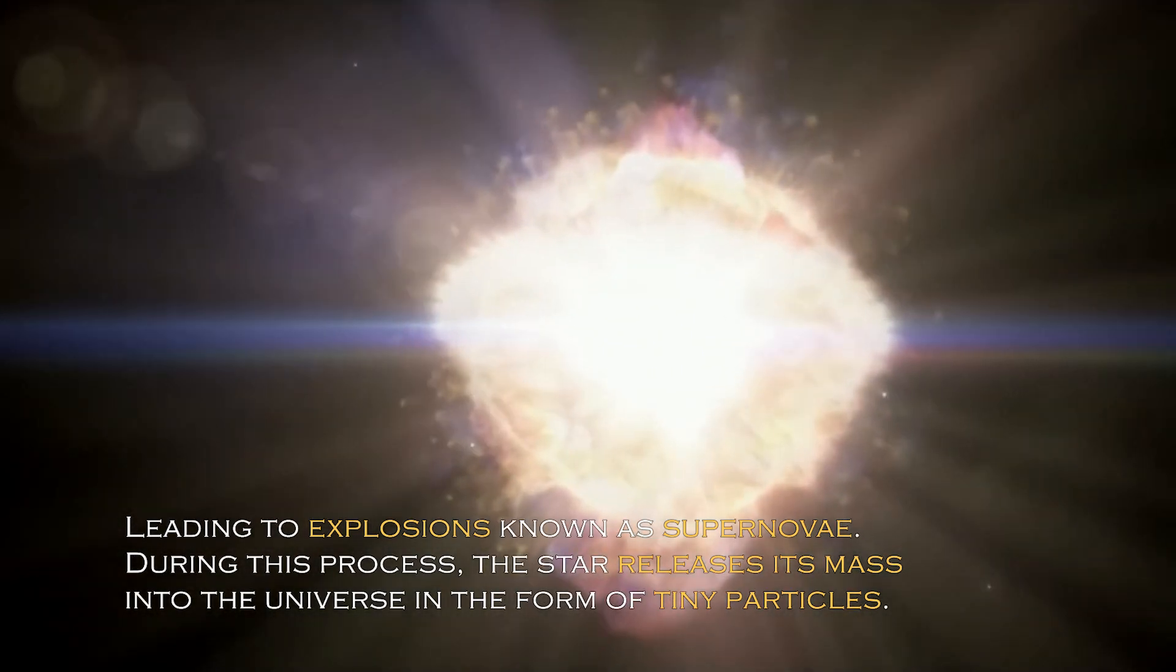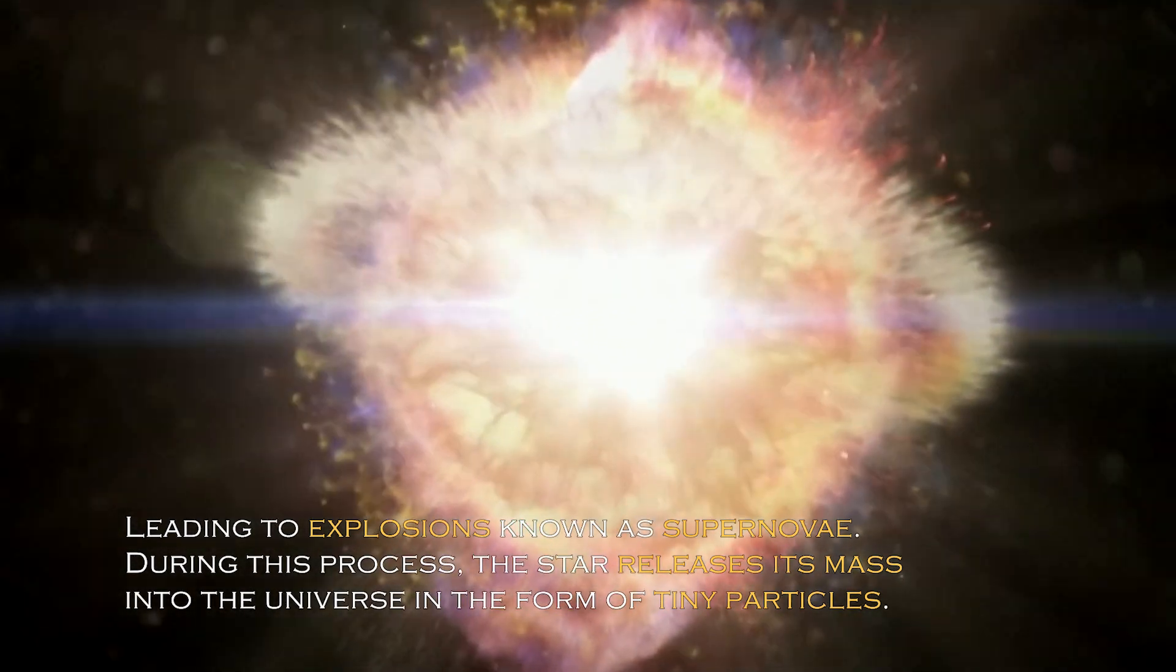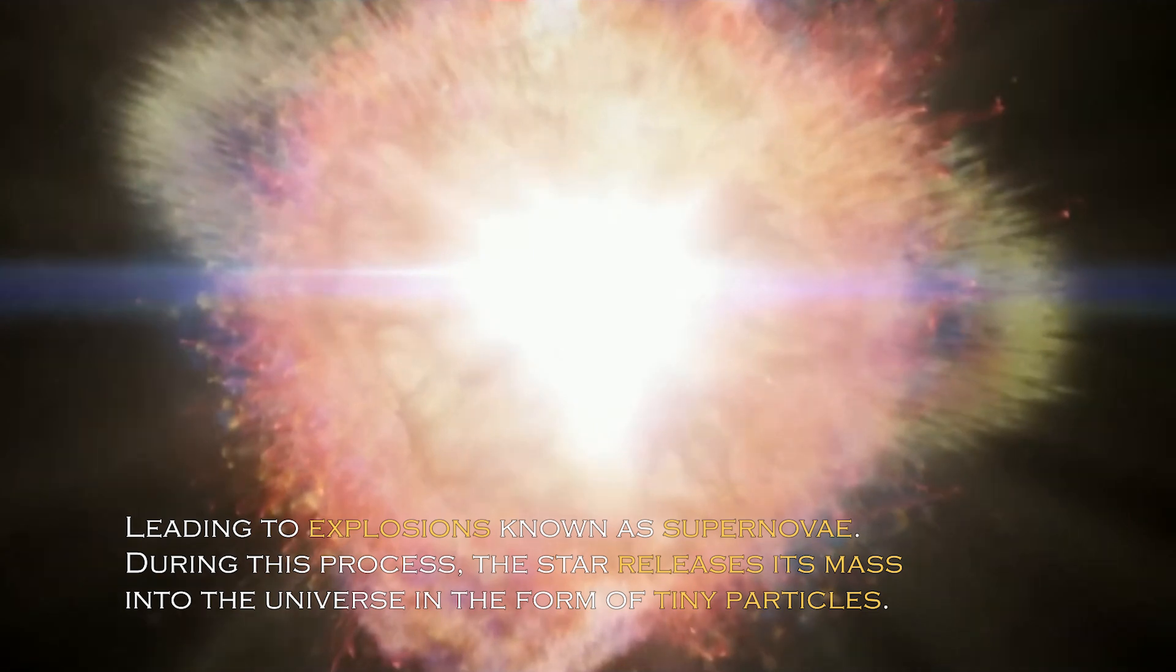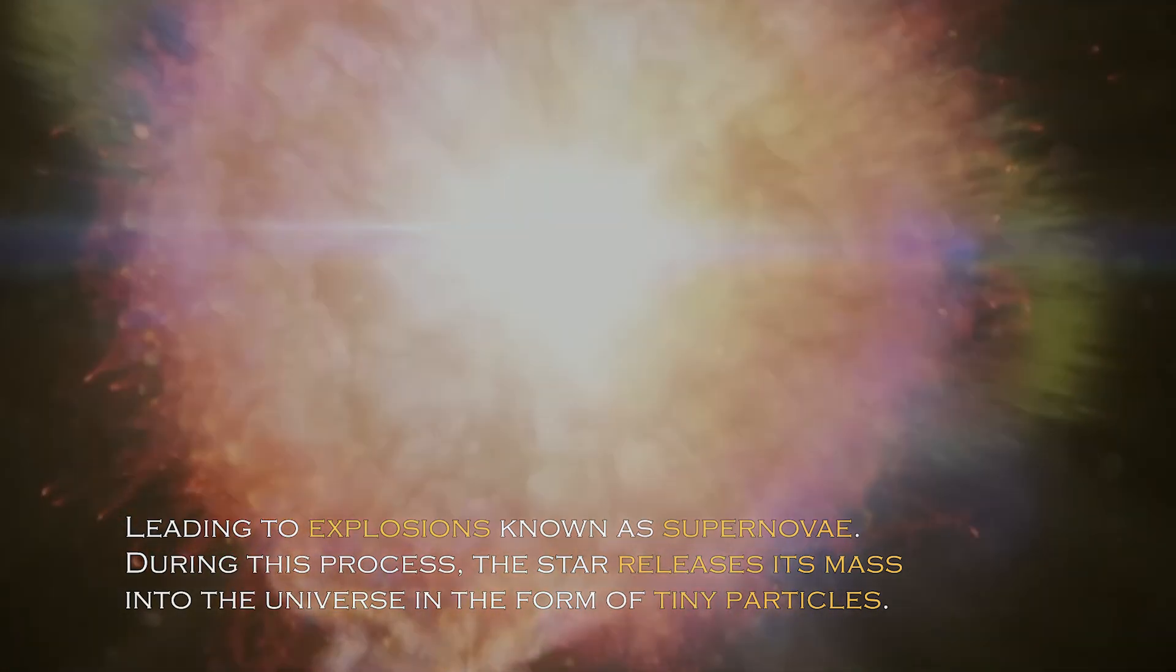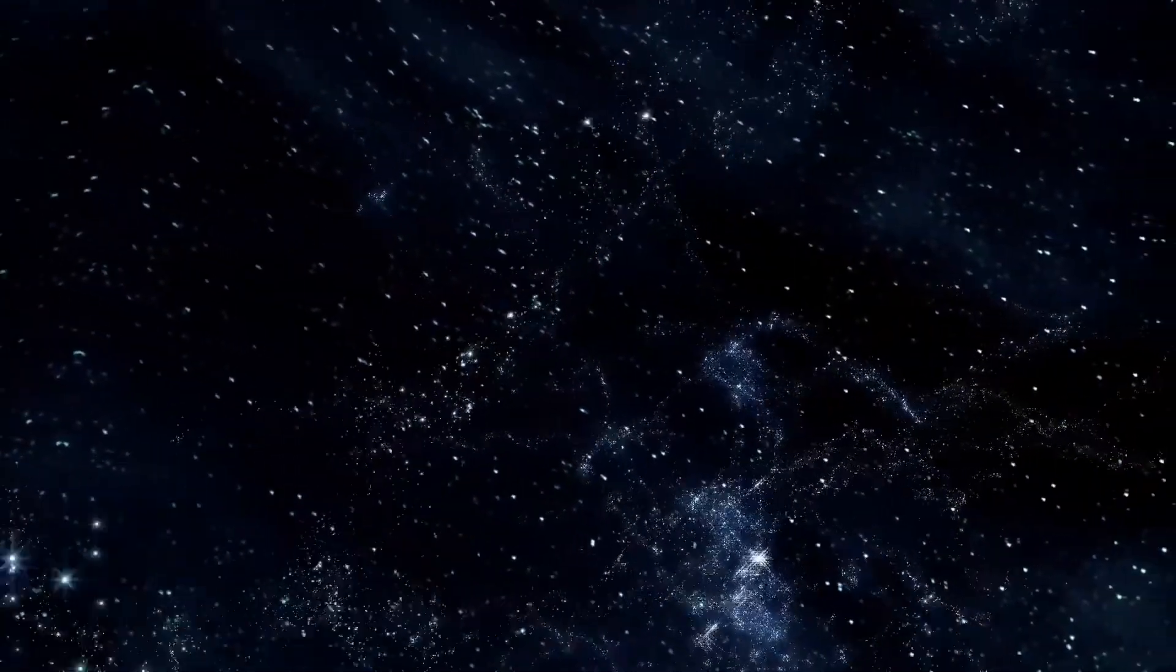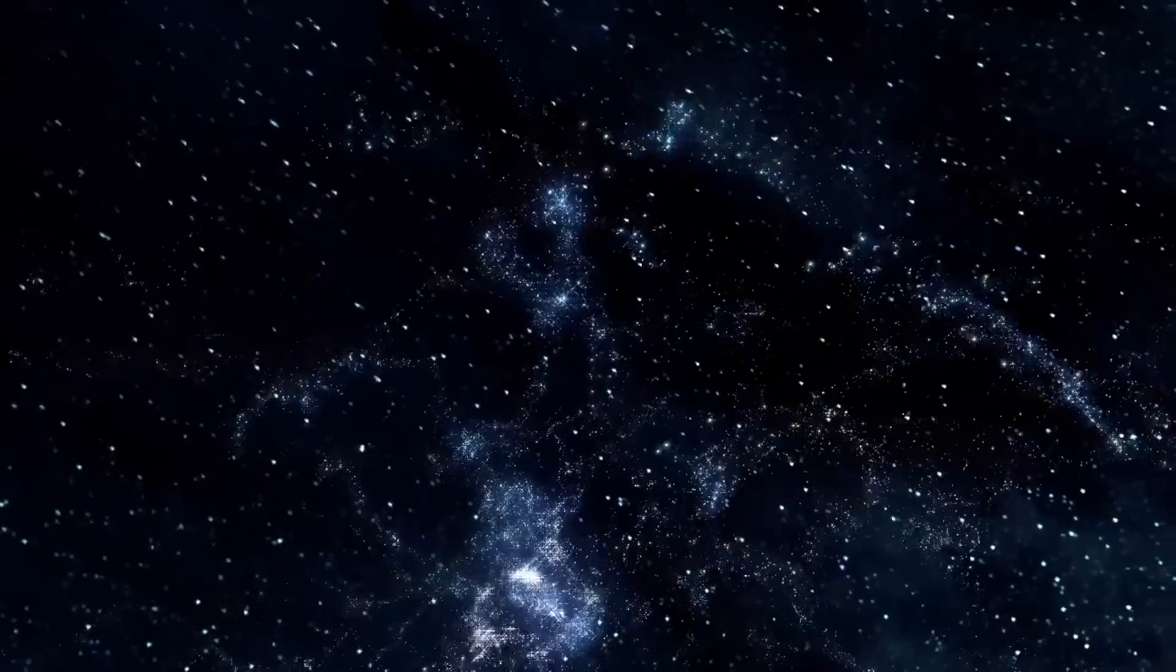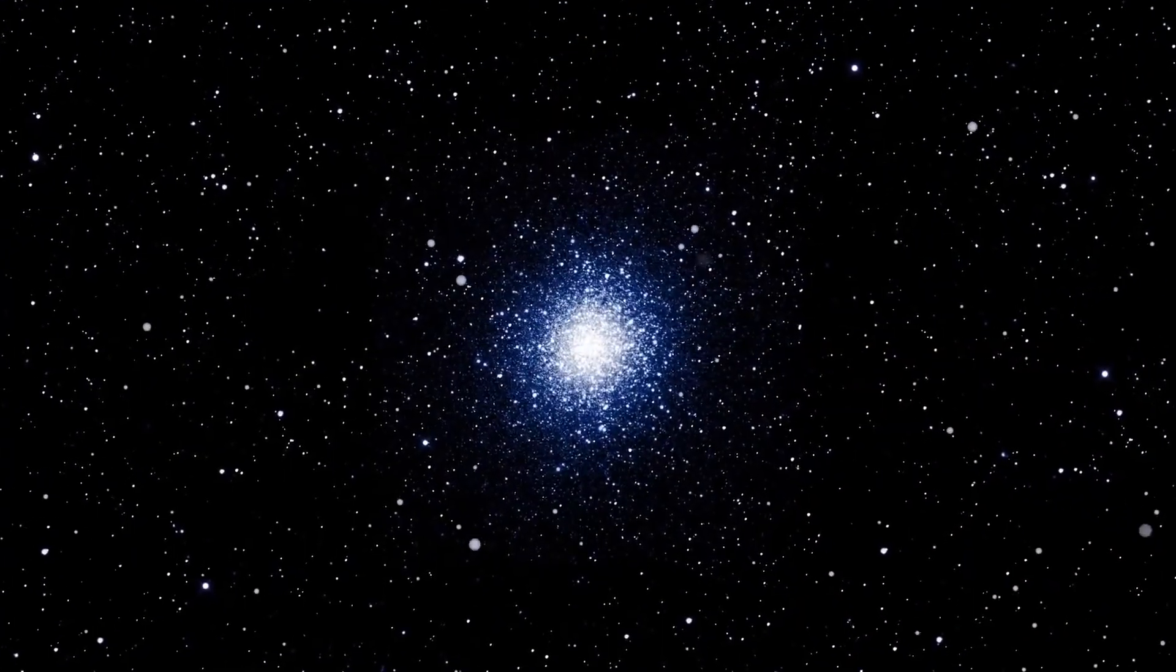This theory is based on the events that occurred when stars age and can no longer retain their gases, leading to explosions known as supernovae. During this process of supernovae, the star releases its mass into the universe in the form of tiny particles. Some people argue that something similar may have happened to these solar systems that suddenly disappeared.